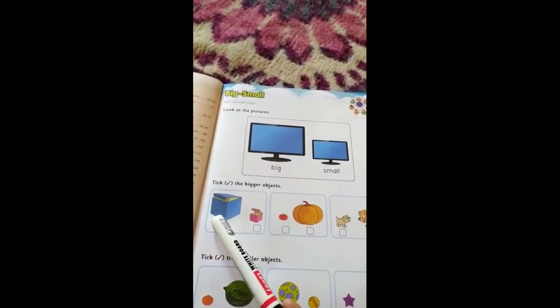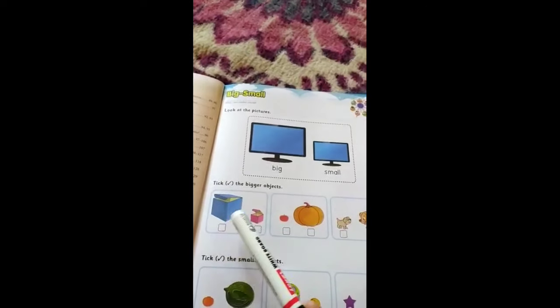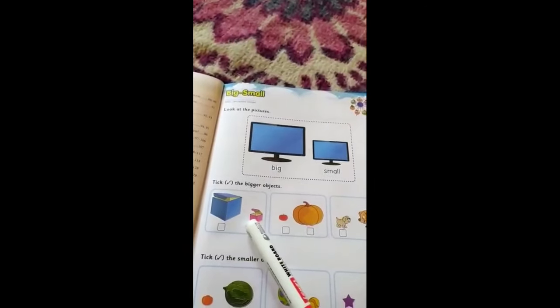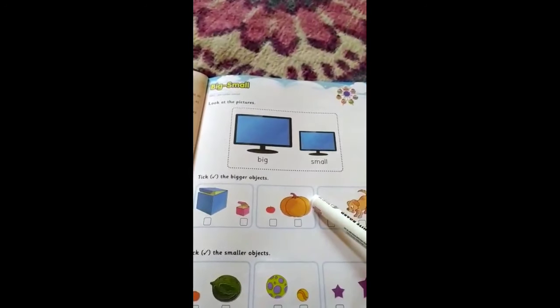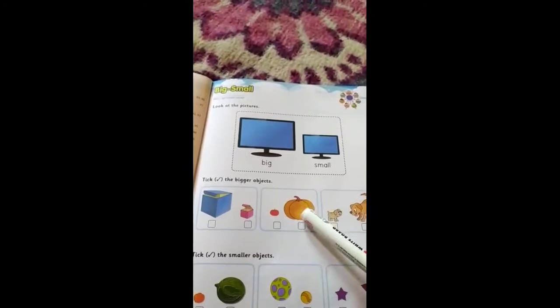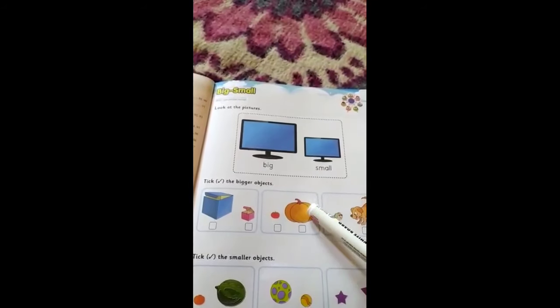Now have a look here. This is a pumpkin, this is a tomato. When we compare these two objects, we can say pumpkin is bigger in size while tomato is smaller.